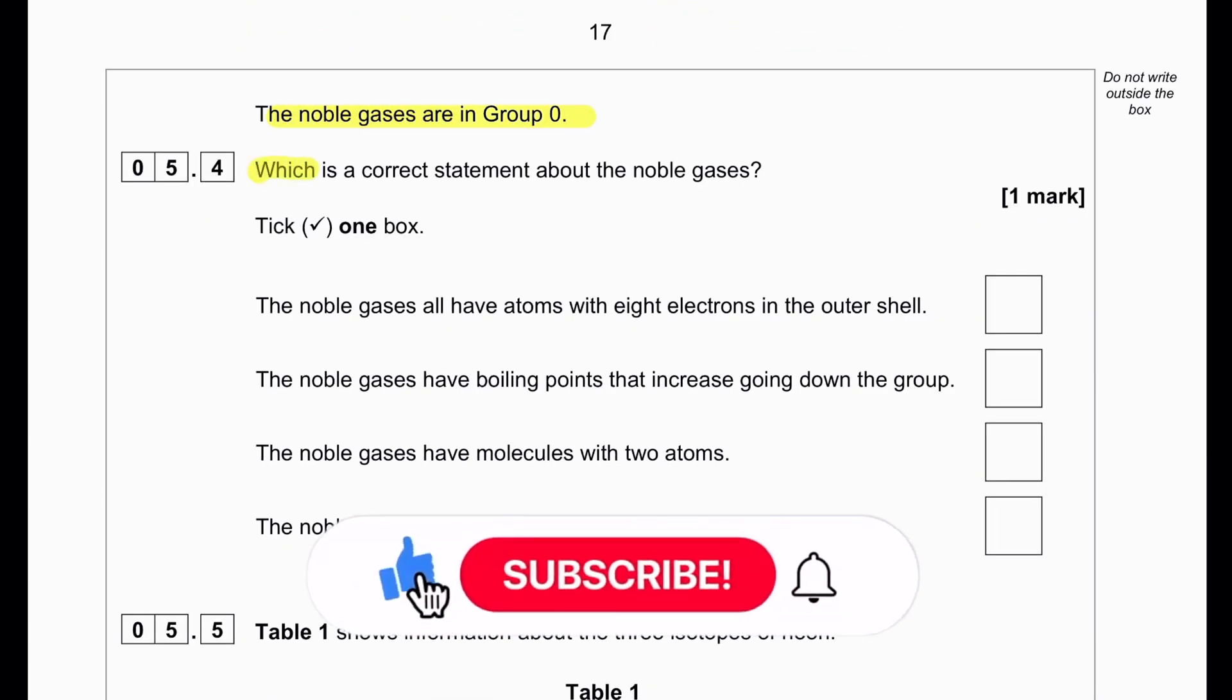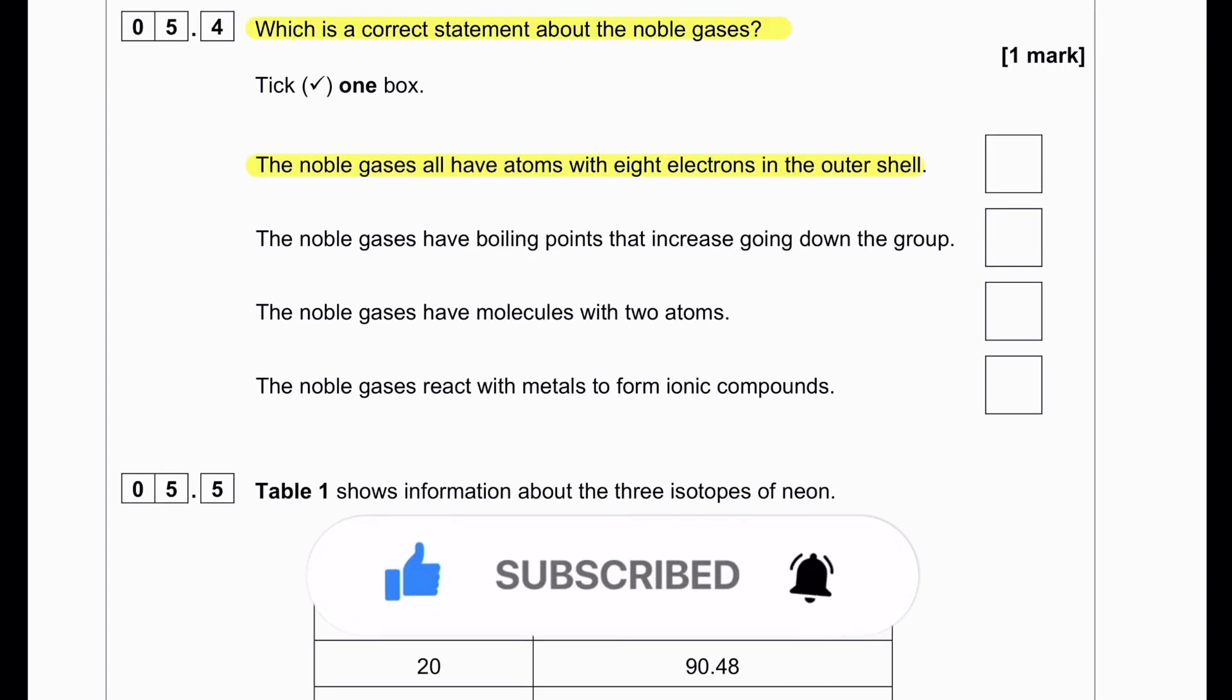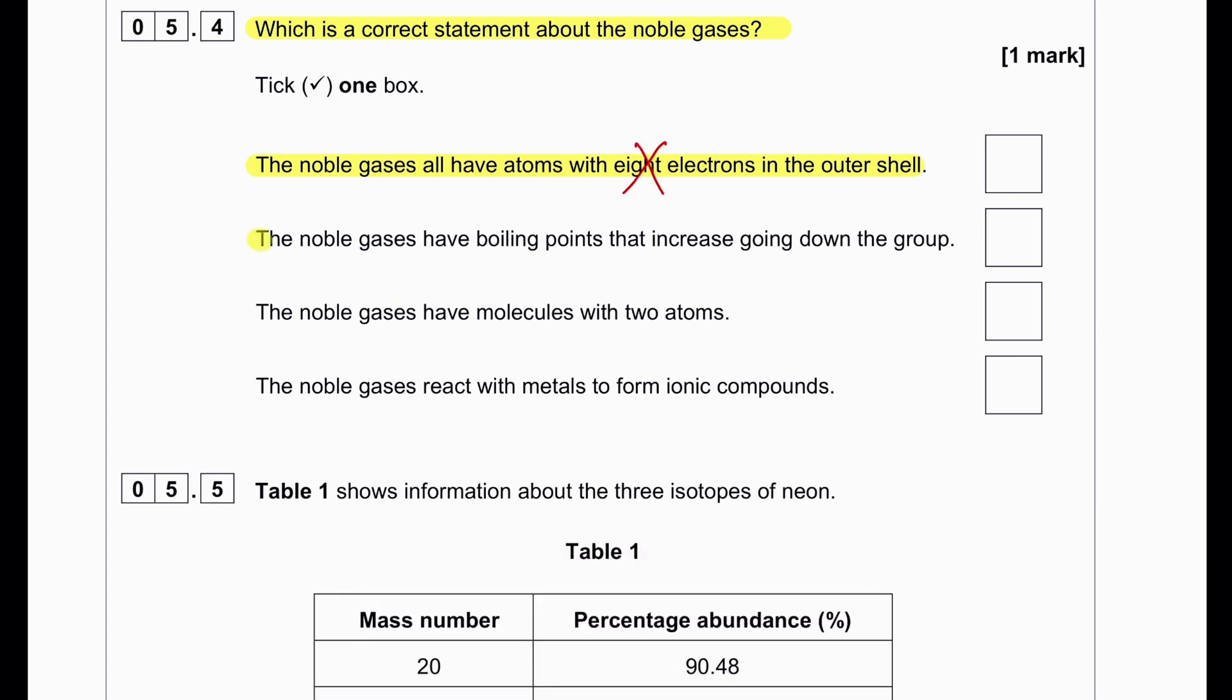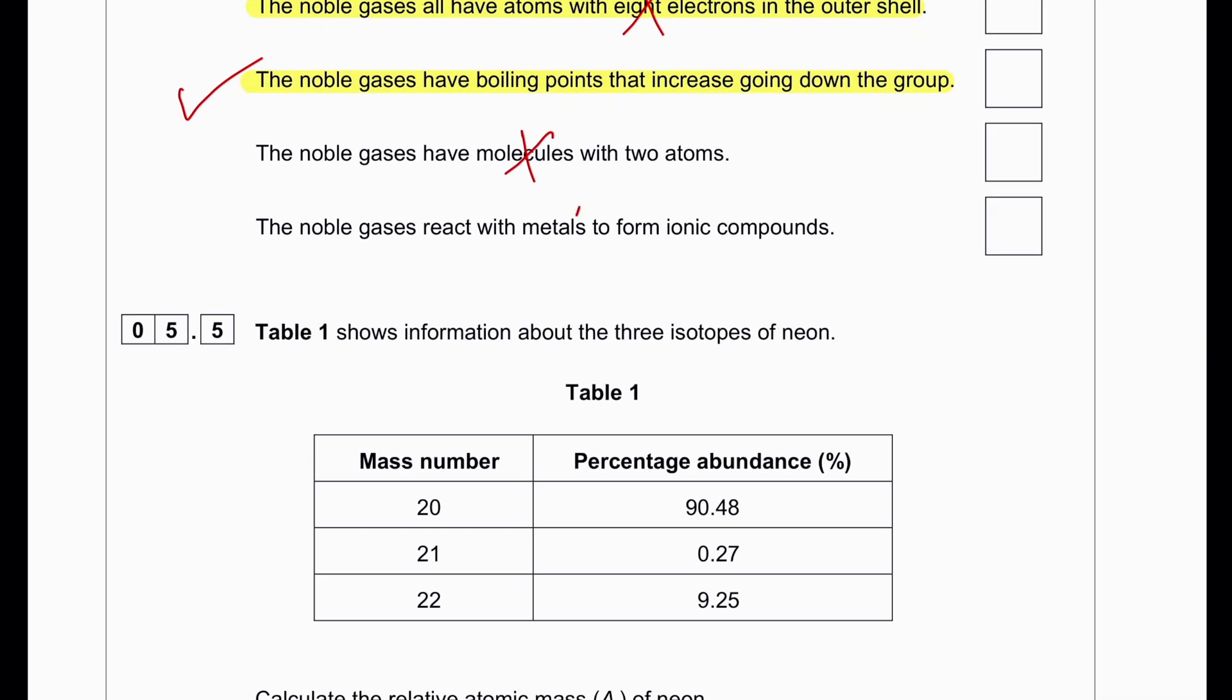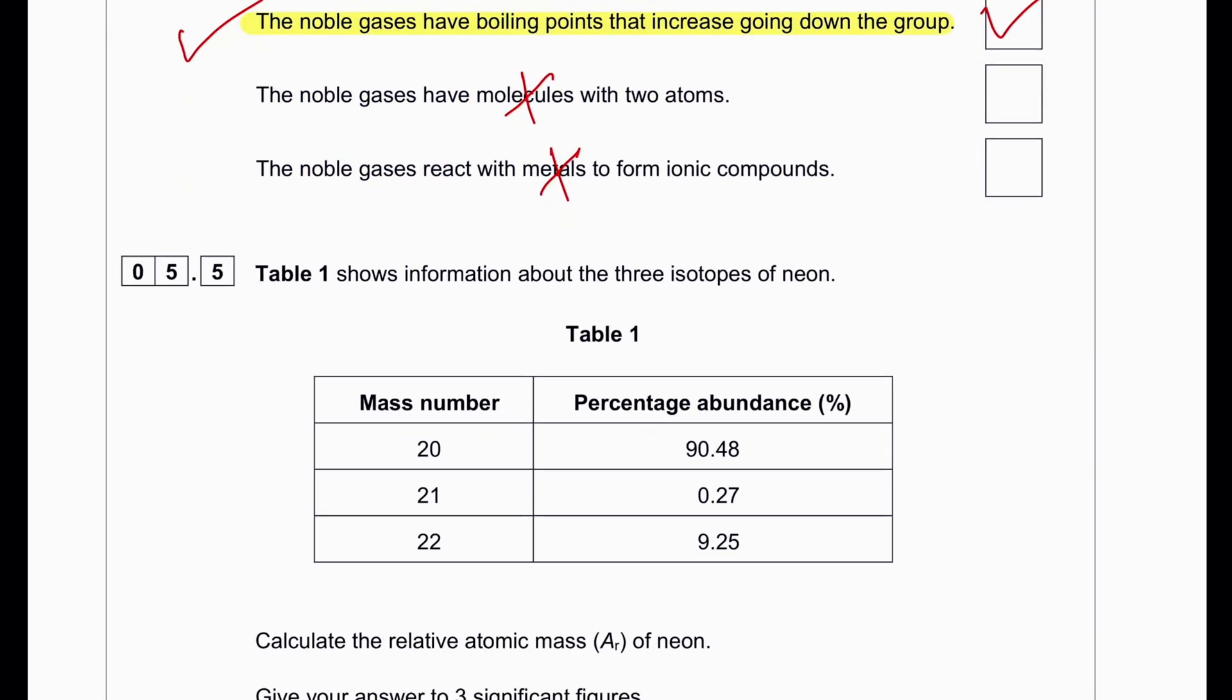Noble gases are in group 0. What is the correct statement about the noble gases? The noble gases all have atoms with 8 electrons in the outer shell - this is wrong because helium has only 2 electrons in the outer shell and is yet a noble gas. The noble gases have boiling points that increase going down the group - yes. The boiling point of noble gases increases going down the group because the atom gets bigger, so they have more inter-atomic forces between them, which we can say van der Waals force of attraction, and this increases their boiling point. Noble gases have molecules with 2 atoms - no, they are monoatomic. Noble gases react with metals - they do not react with metals.